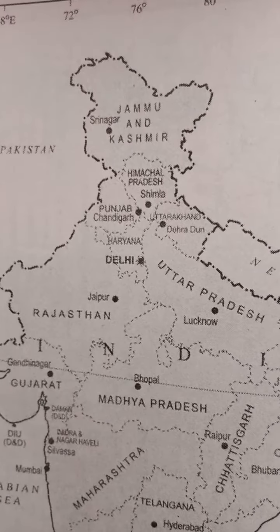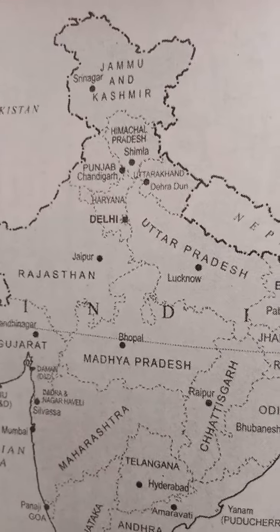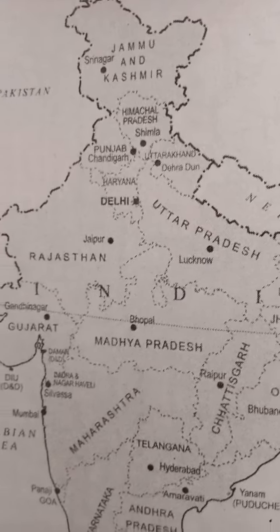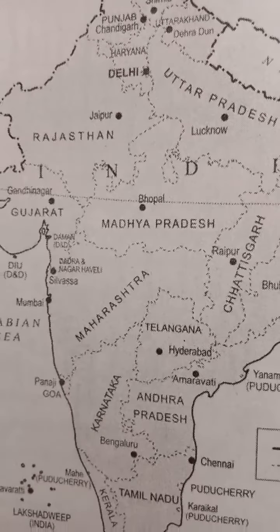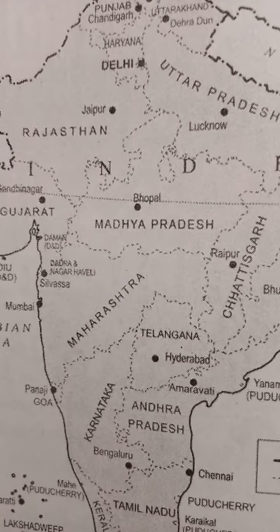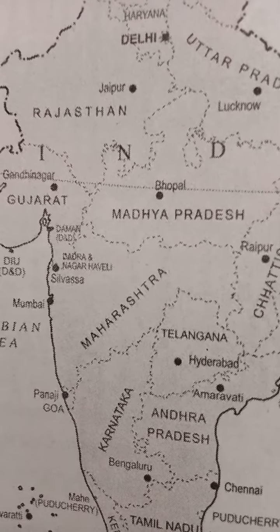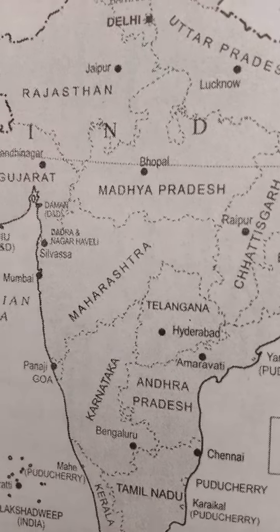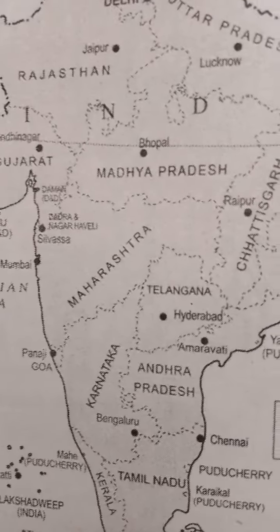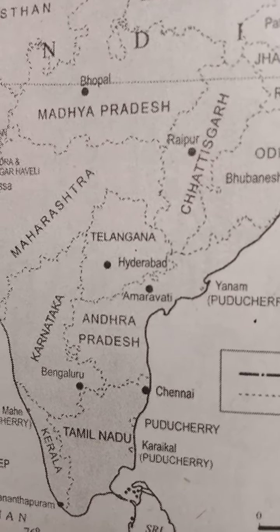As you know, Jammu and Kashmir has Srinagar, Delhi, Rajasthan has Jaipur, and Madhya Pradesh has Bhopal. Maharashtra is here as you can see, as well as Dadra and Nagar Haveli, Chhattisgarh with Raipur, and Telangana with Hyderabad.